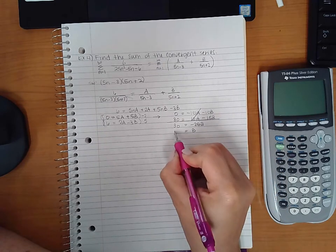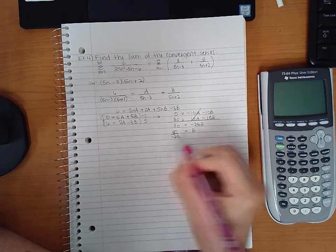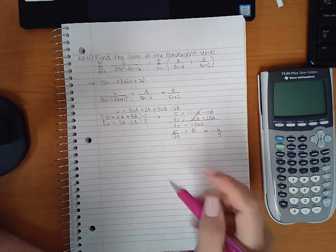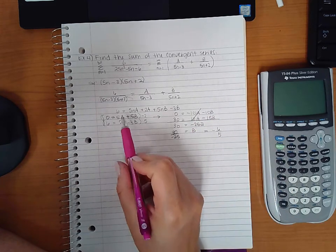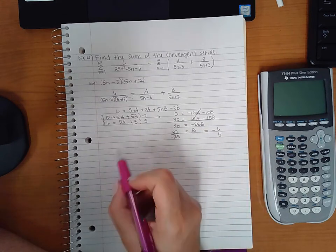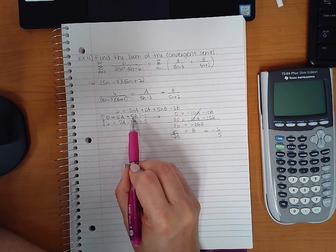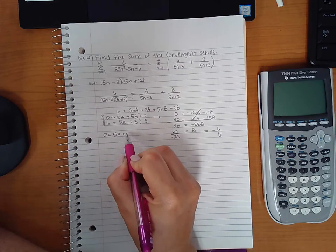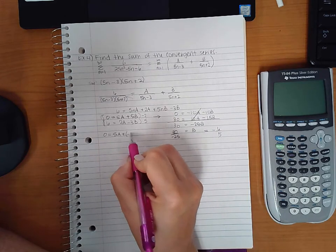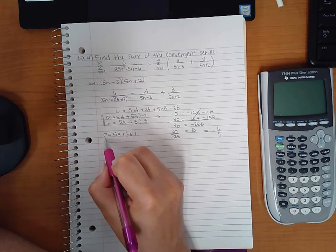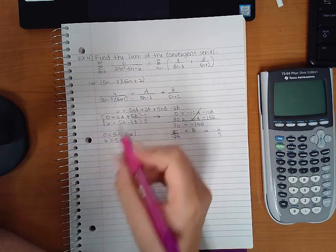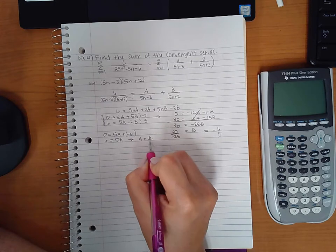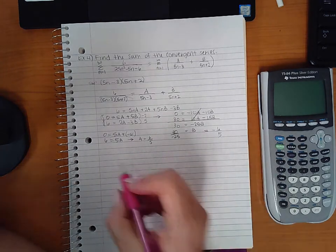So here I end up with 30 equals negative 25B, which means that B equals 30 over negative 25, or if I simplify that, negative 6 over 5. Then I can plug it back into one of these equations to find A. Since B is being multiplied by 5, I'm going to use this equation. So 5A plus 5 times negative 6/5 equals 0. If I add 6 to both sides and divide by 5, I get that A equals positive 6 fifths.